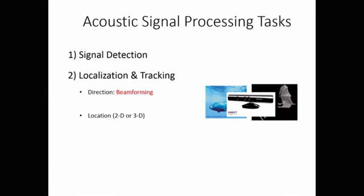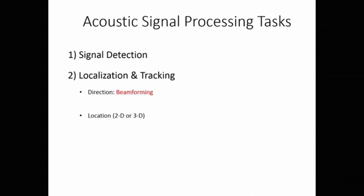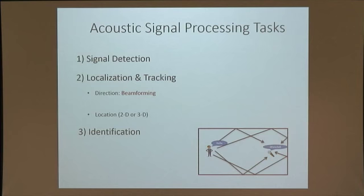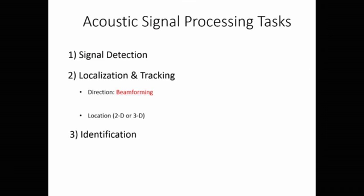The third task is identification, which means recovering the actual source signal. For example, in room acoustics, when we say hello, at the receiver location we may hear a distorted signal. By identification techniques, we want to recover the actual source signal from the distorted one. Blind deconvolution is an identification technique used for recovering the source signal—sometimes also called echo cancellation.